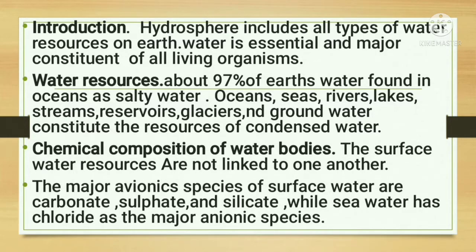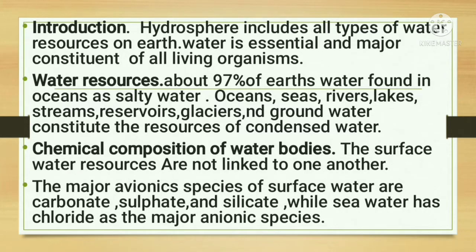Various factors are contaminating drinking water — improperly discarded hazardous waste leads to a variety of waterborne diseases from polluted or contaminated water. Regarding water resources, different types exist: oceans, seas, rivers, lakes, streams, reservoirs, glaciers, polar ice caps, and groundwater. These are the resources of condensed water found in various parts of the hydrological cycle.